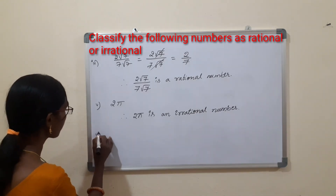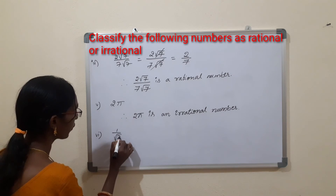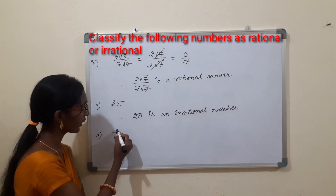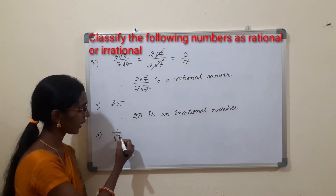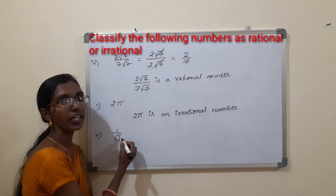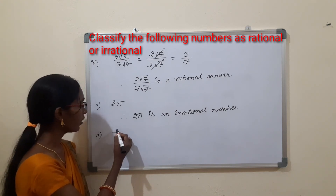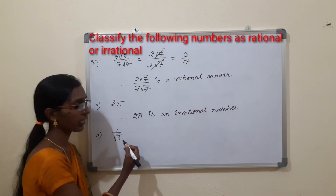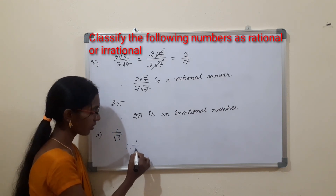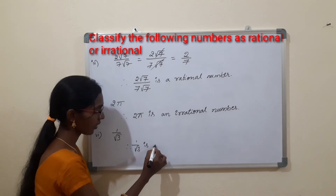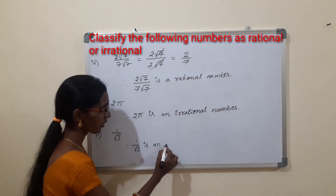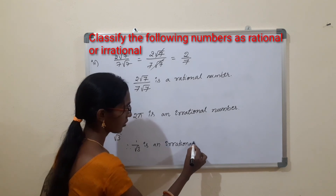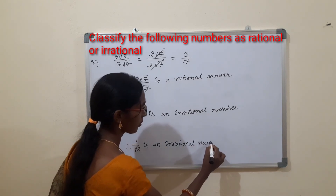The sixth one is 1/√3. Dividing any number by an irrational number gives an irrational number only. Therefore 1/√3 is an irrational number.